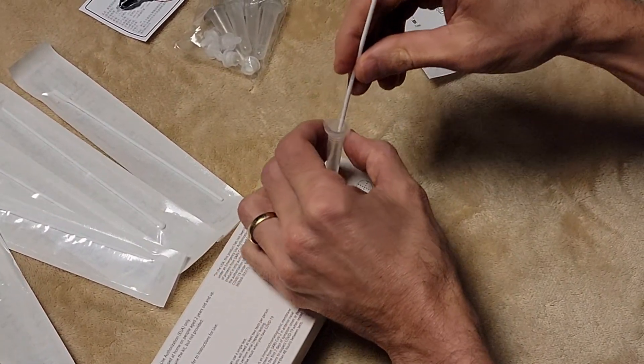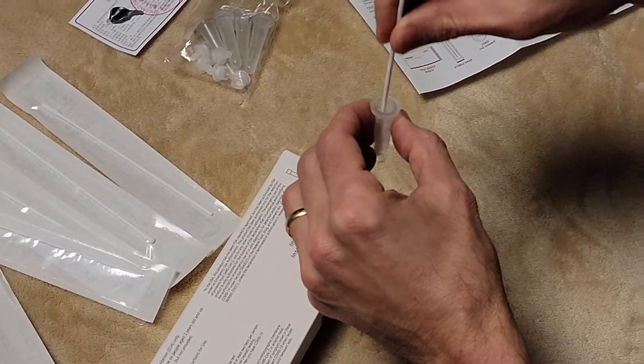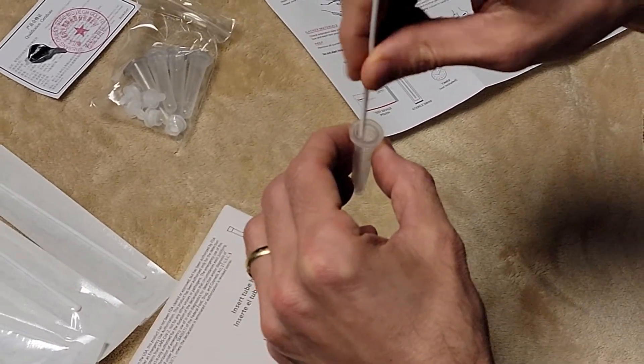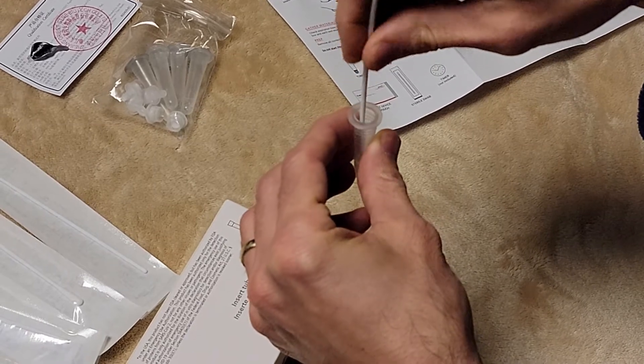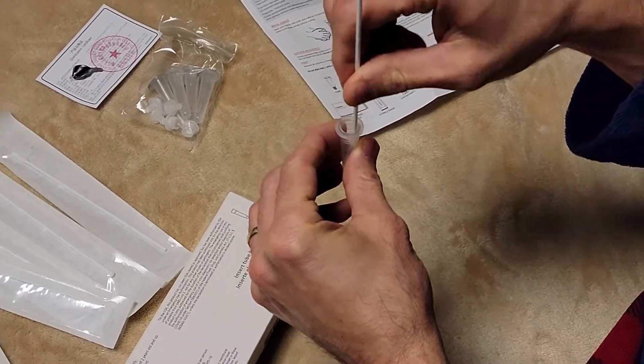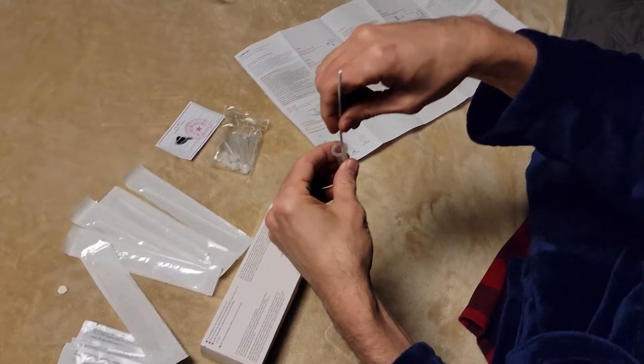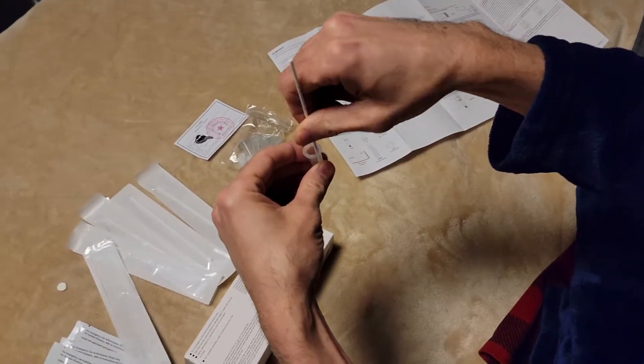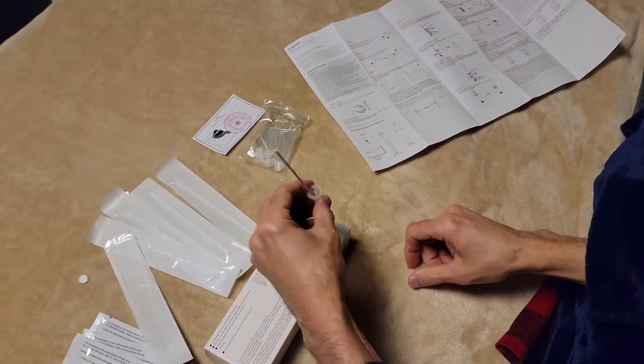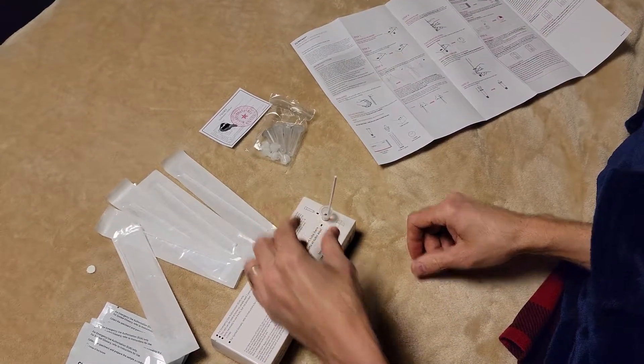It says to take this out and mix it vigorously by rolling the swab tip at least six times on the bottom and the sides of the tube. Okay, so that's quite a few times there. Rubbing vigorously, and then we put it back in there.